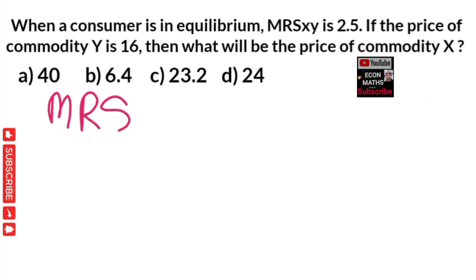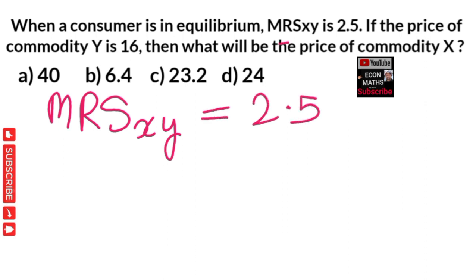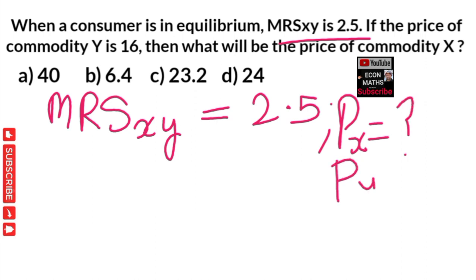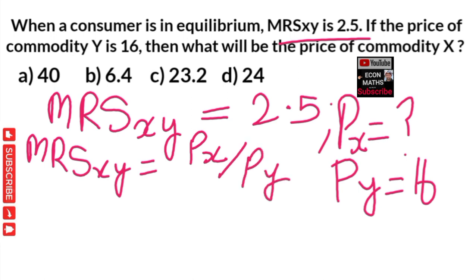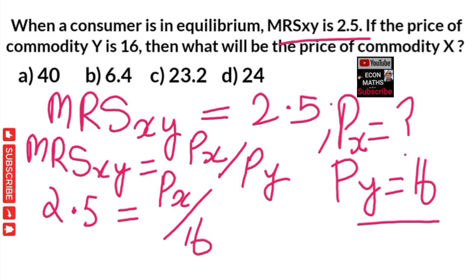Our marginal rate of substitution between X and Y is given as 2.5. We have to find the price of X, but the price of Y is given as 16. Using the equilibrium condition — marginal rate of substitution between X and Y equals price of X divided by price of Y — we write: 2.5 equals price of X divided by 16.